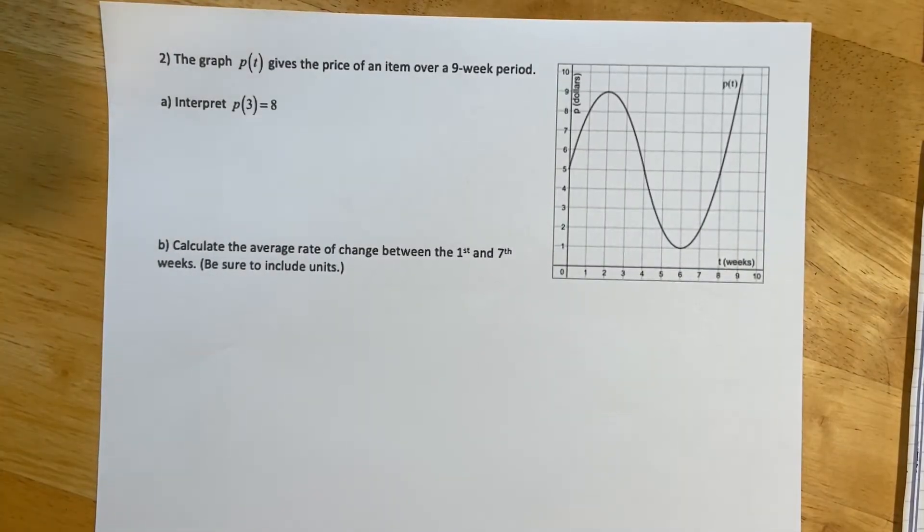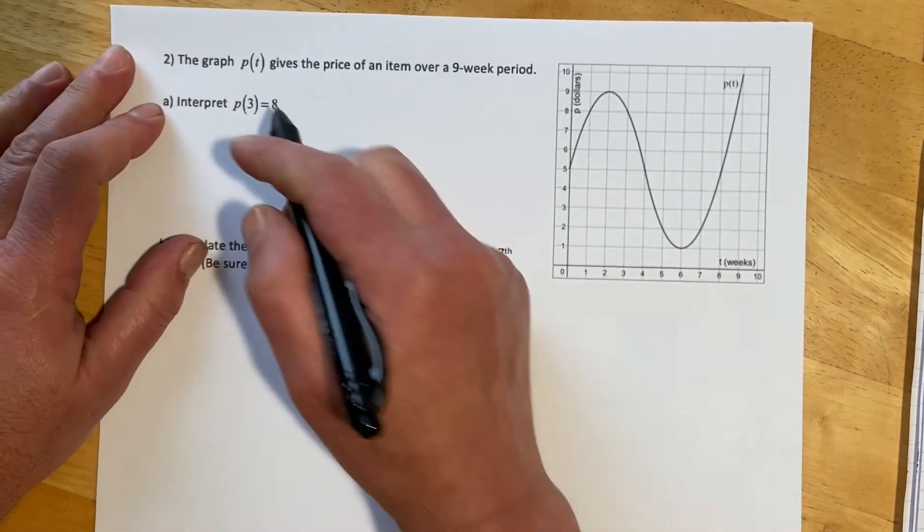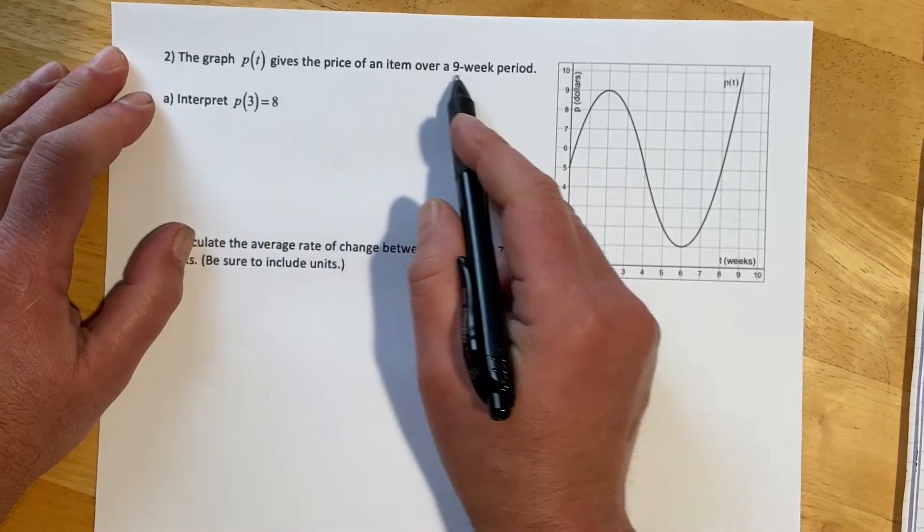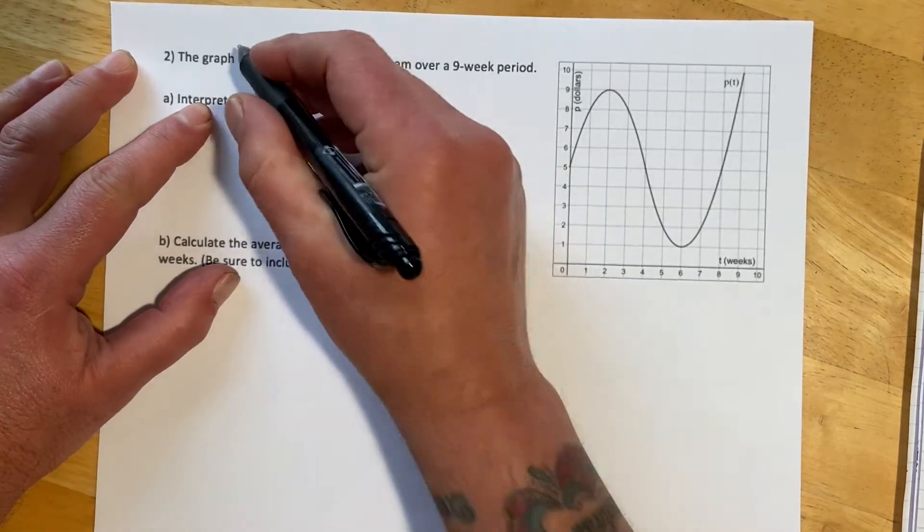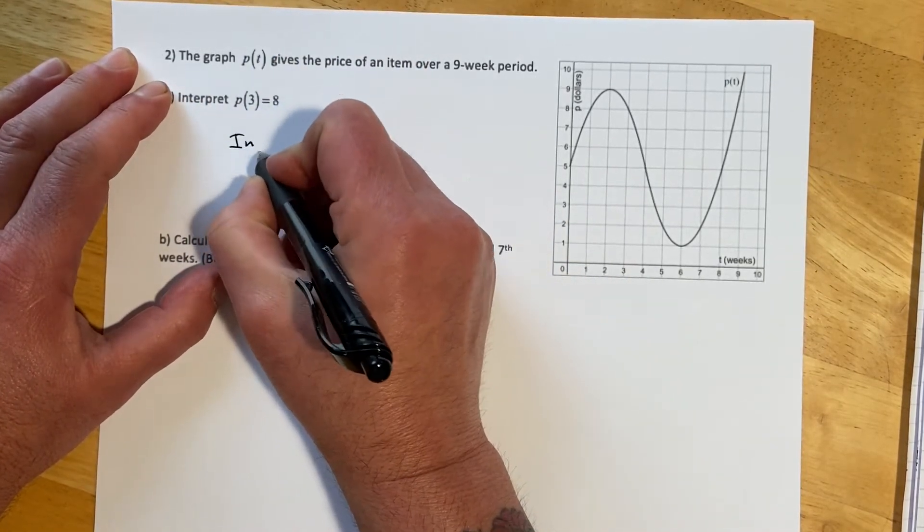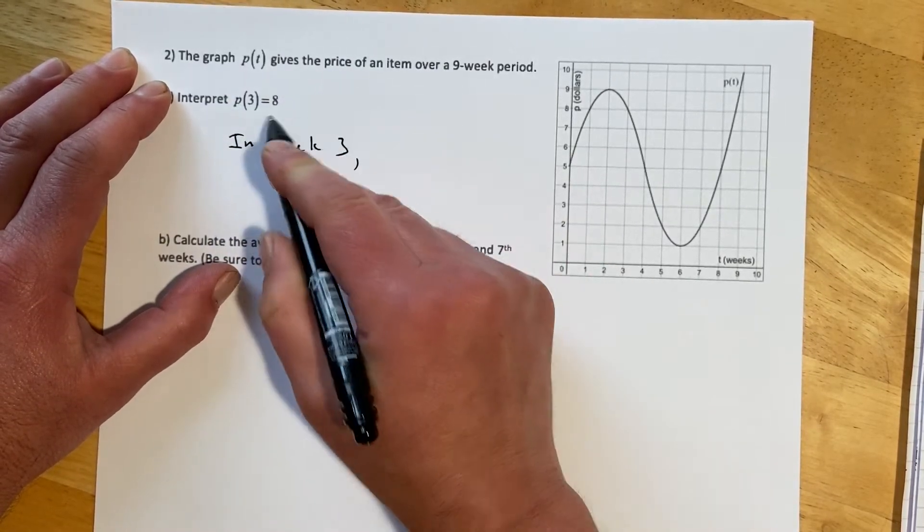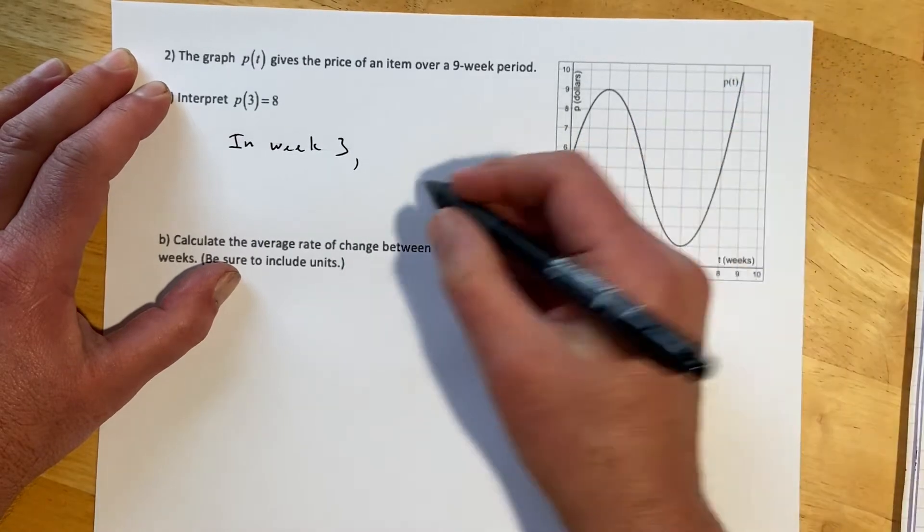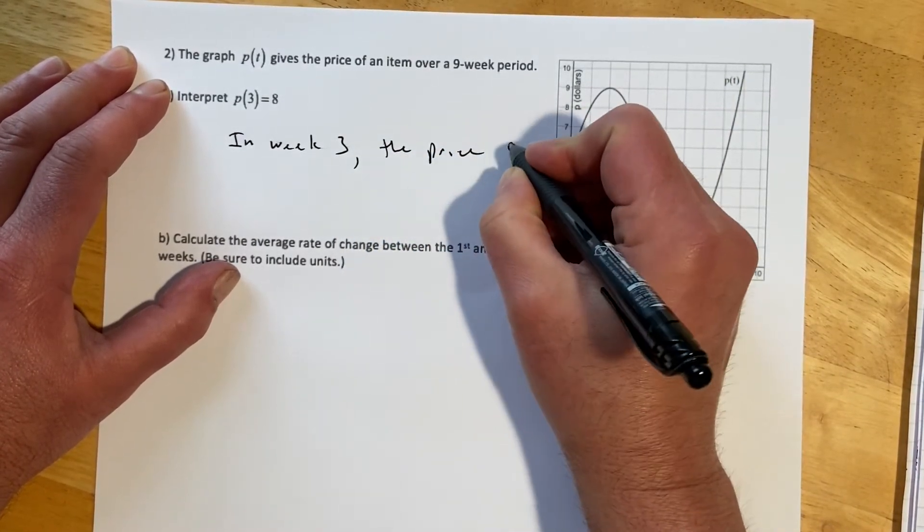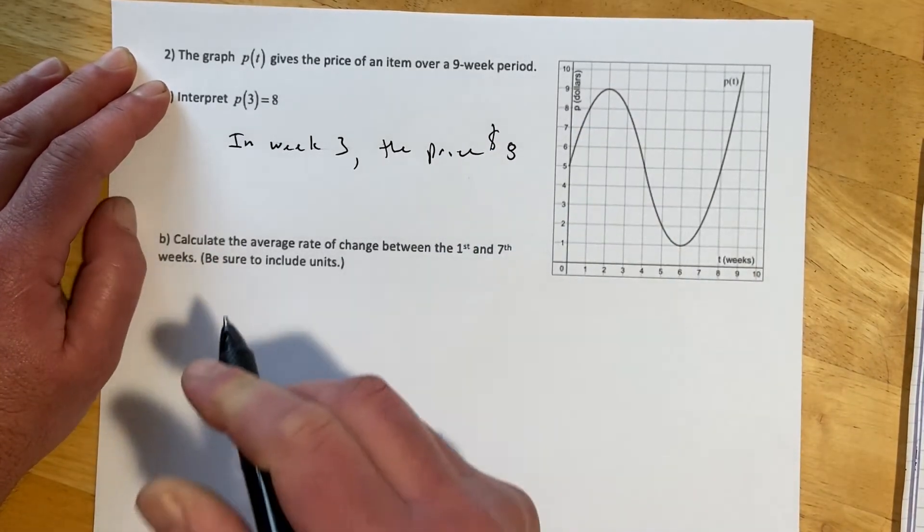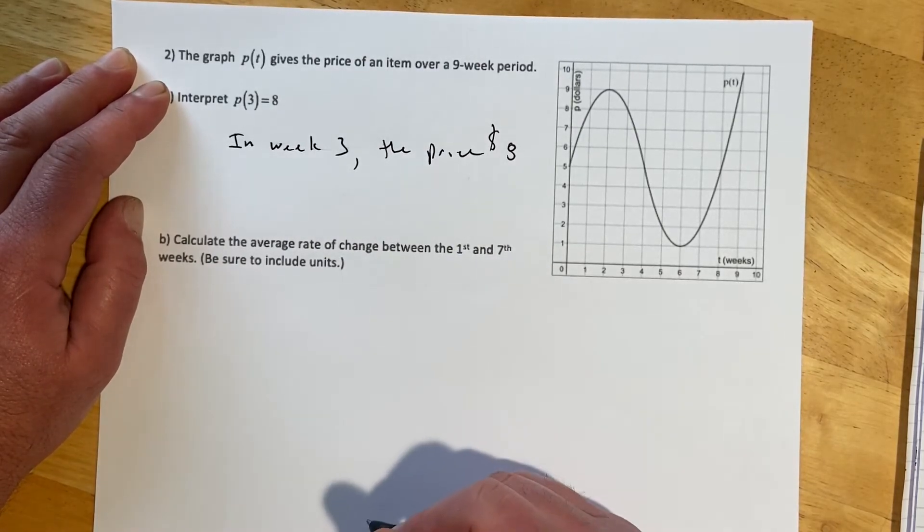Okay, and then we're just going to look at average rate of change with a bunch of different prompts and kind of some different notation. For number 2, we've got the graph P of T gives the price of an item over a 9-week period. Interpret P of 3 equals 8. So P of T, this would be in week 3, the price is the output. So the price would be $8. Calculate the average rate of change between the first and seventh weeks. Be sure to include units.